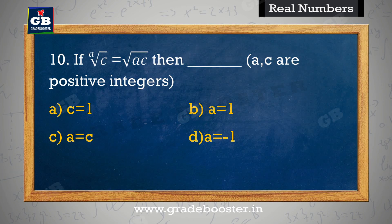If √a × √c is equal to √(ac), then a and c are positive integers. A. a·c equal to 1, B. a equal to 1, C. a equal to c, D. a equal to minus 1.